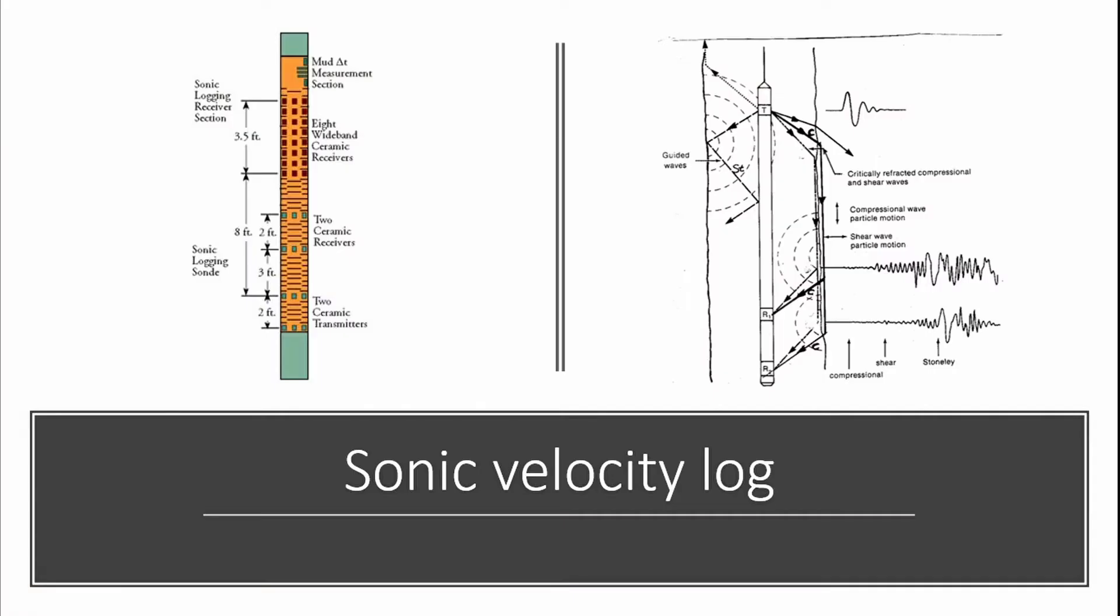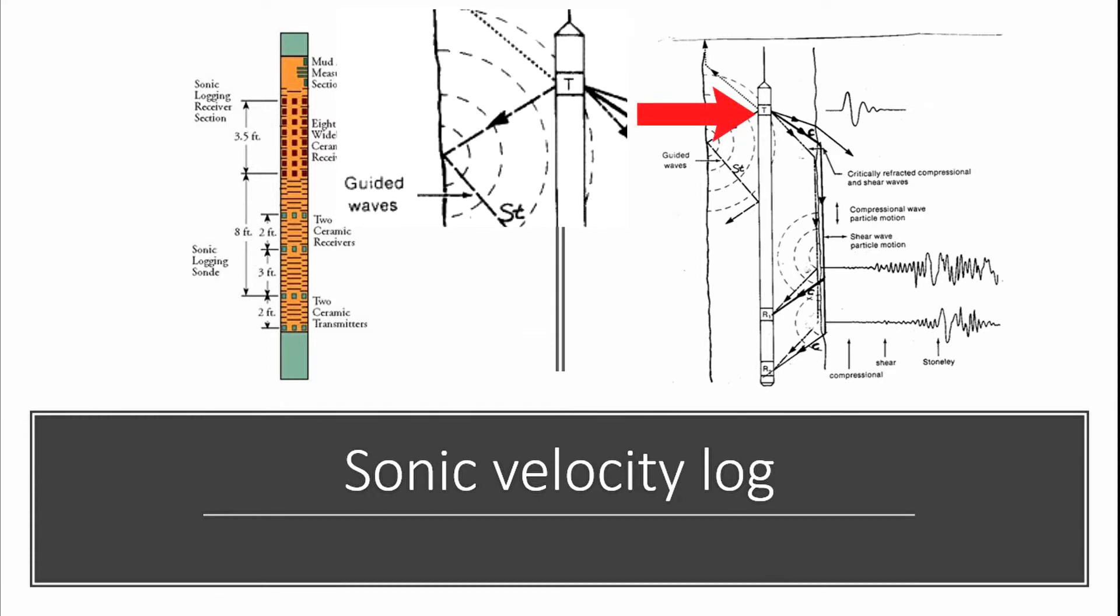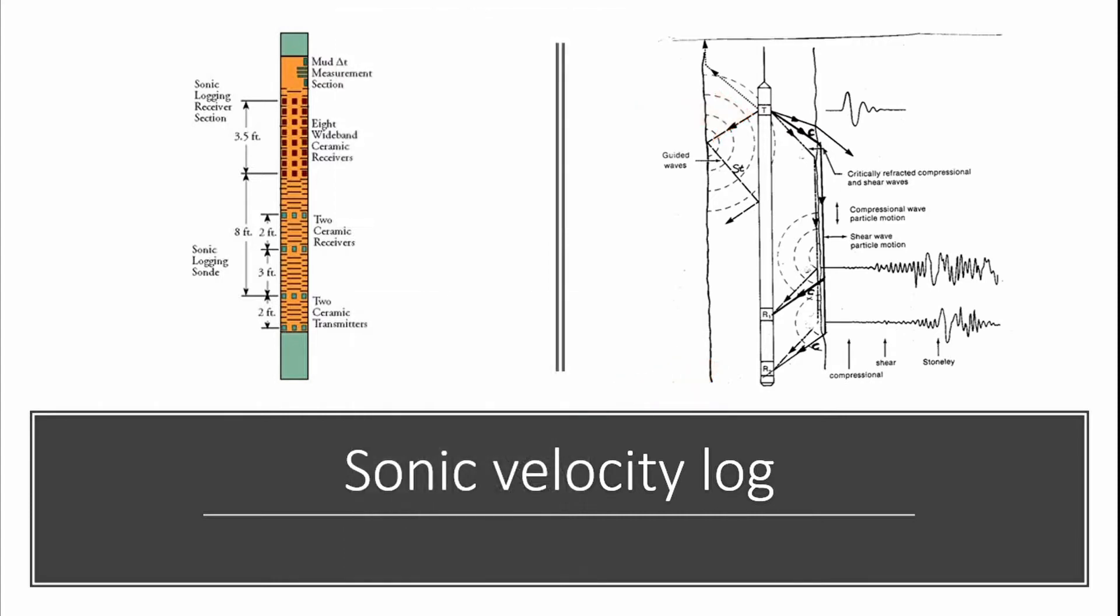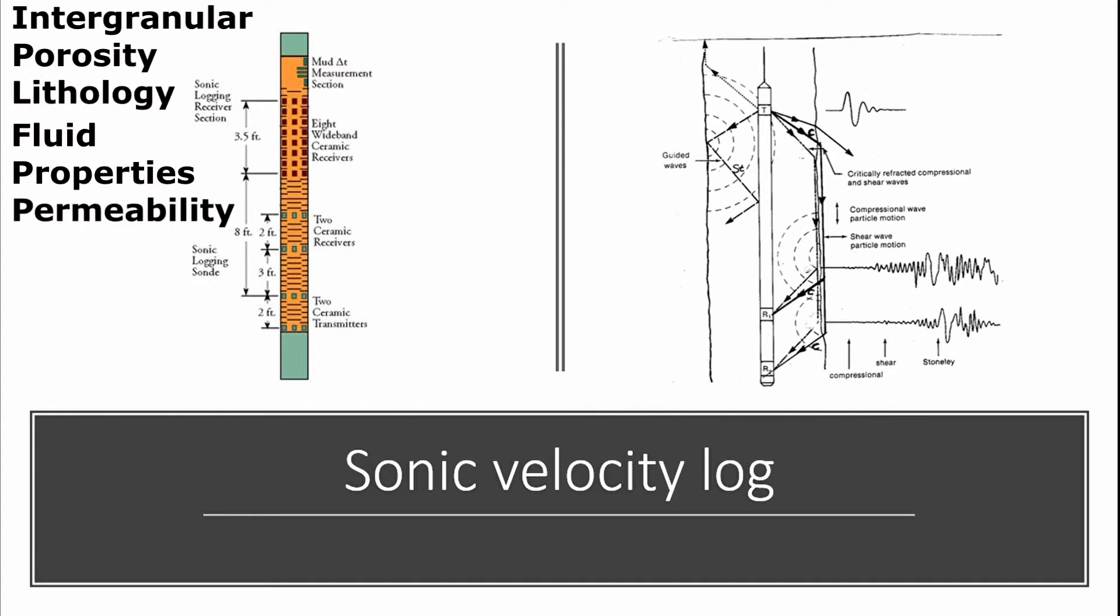Sonic velocity, also known as acoustic velocity logs, use a transducer that produces a pulse of sound that travels through fluid and rock to a probe. These probes use piezoelectric transducers to detect electrical energy and convert it into acoustic energy. For accurate readings, the borehole must be 3 to 16 inches in diameter. Similarly to density and neutron porosity logs, identification of a matrix is required, but may be adjusted afterwards. These instruments are used to identify intergranular porosity, lithology, fluid properties, permeability, and more.